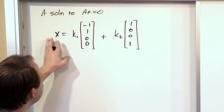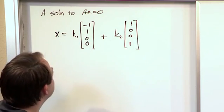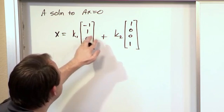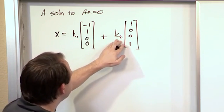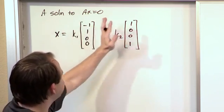So the solution really is an infinite set of column vectors x. If I lock down any value of K1 and K2, like K1 could be 10 and K2 could be -3, then I do the multiplication, then I do the addition, and I get an answer for x.